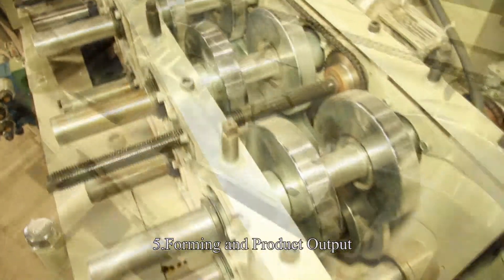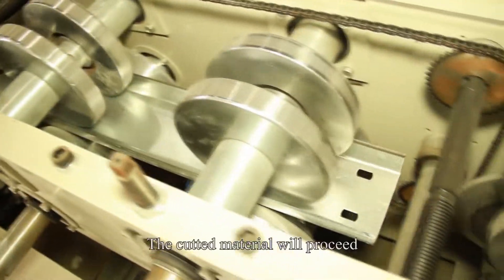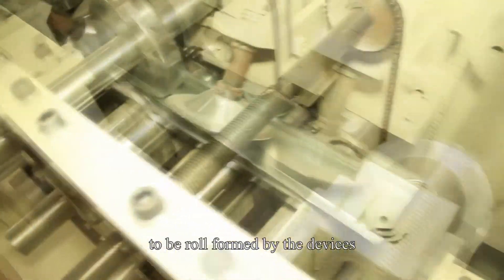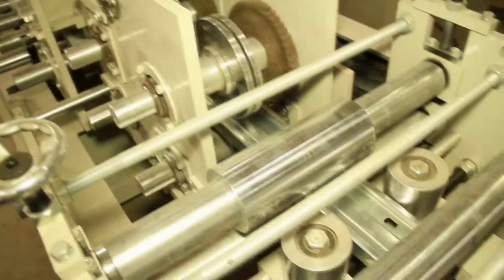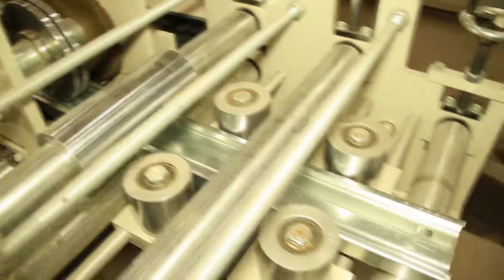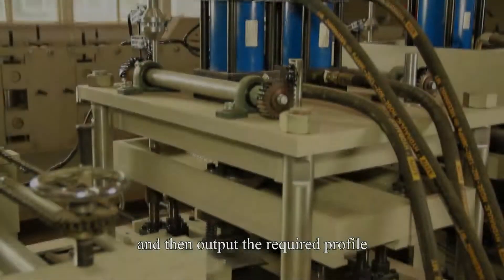Number 5: Forming and Product Output. The cut material will proceed to be roll formed by the devices of lip, height and reinforcing rib, and then output the required profile.